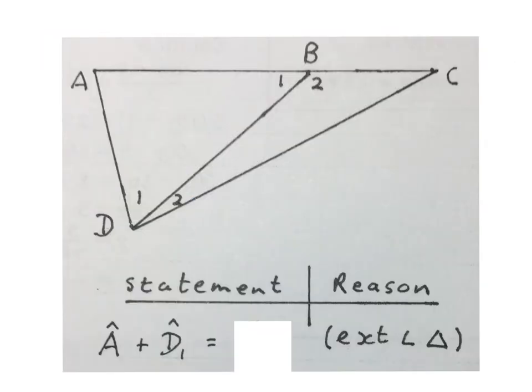The next problem you might run into might look like this. They give you this sketch and they do a statement and reason for you at the bottom and they leave out a piece of your statement that you must find the answer for. So they say that angle A plus that angle D1 will be equal to which angle that is an exterior angle to them.